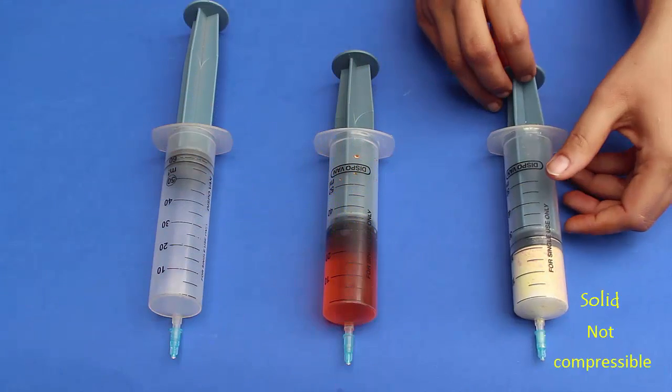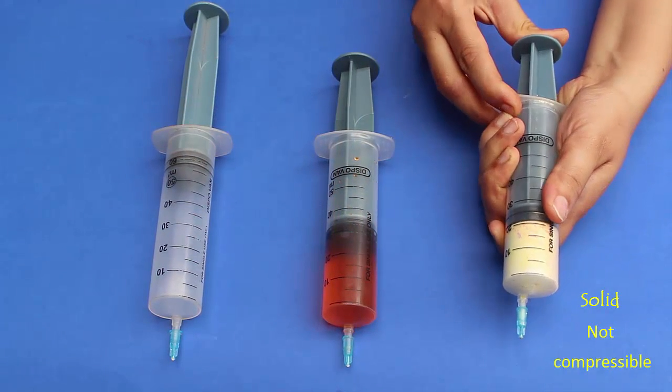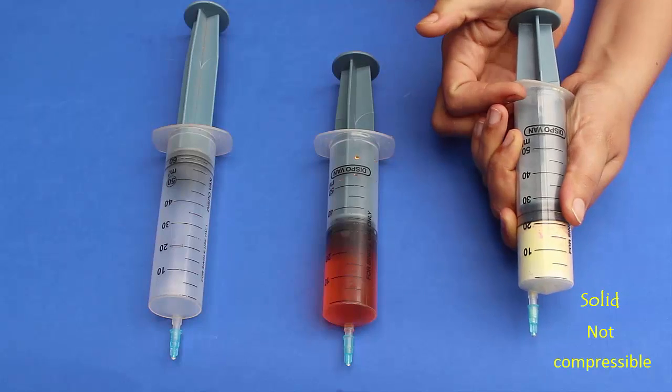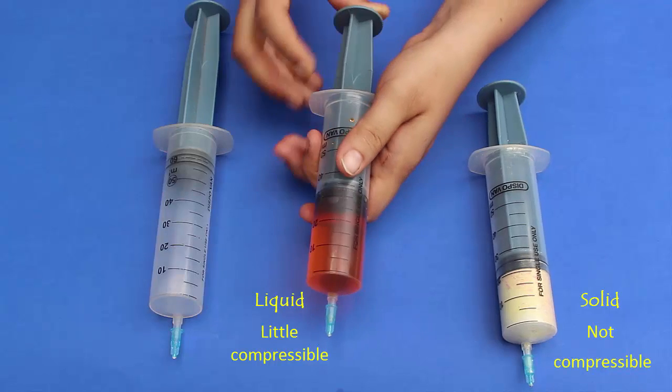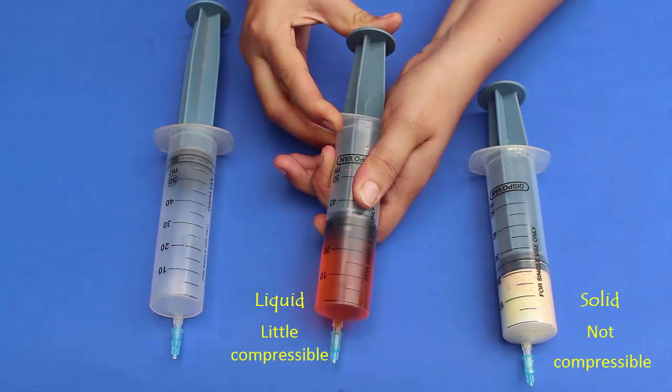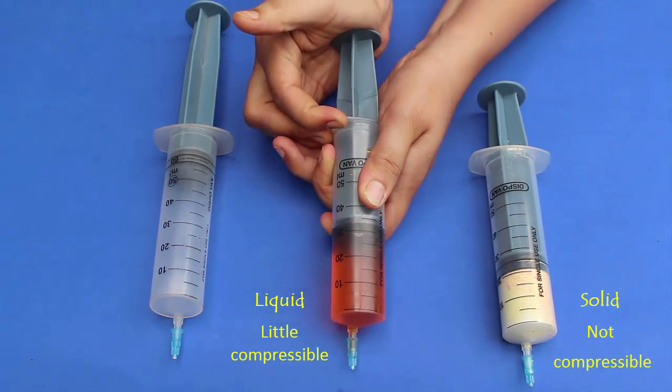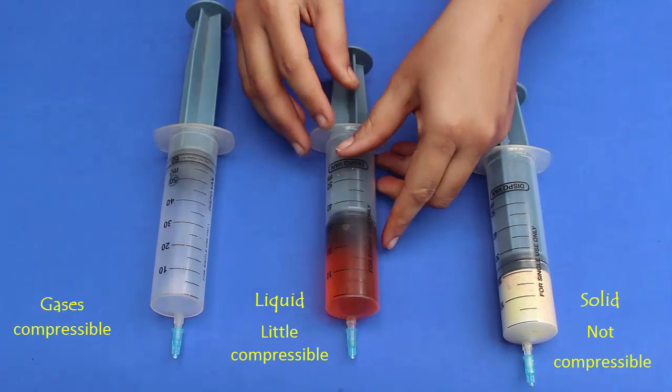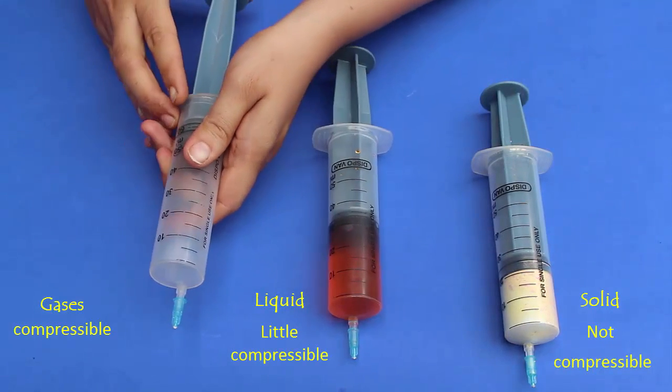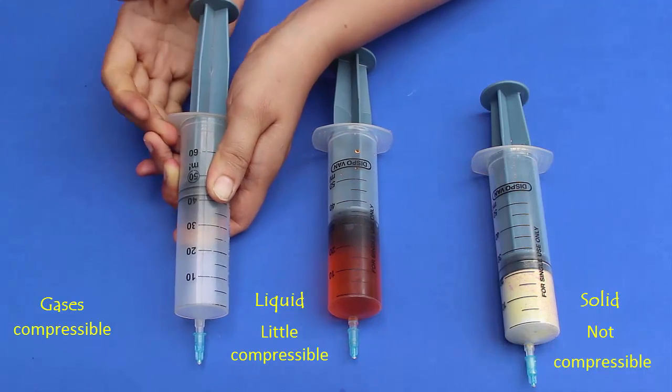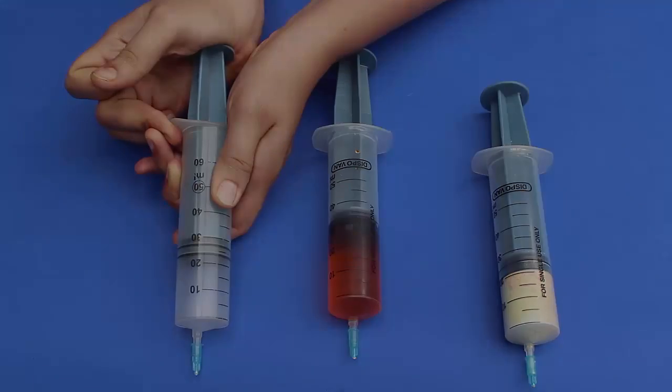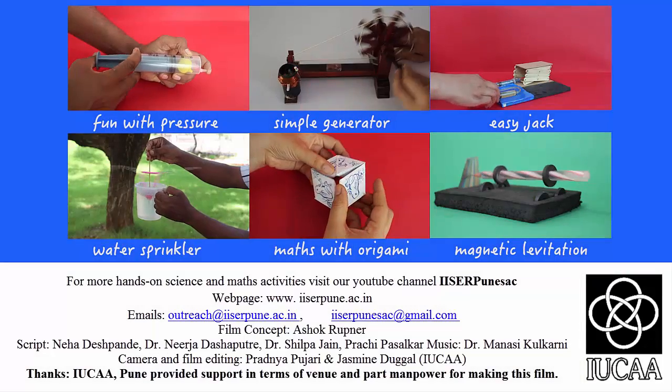What we learn here is, solids have a regular shape and closely packed molecules which doesn't allow us to compress further. Liquids have loosely packed molecules which allows little to compress, but here you can't see with the muscle power. In the case of gases, the molecules move in all directions at faster speed with large interspacing, and you can see it compress very easily.